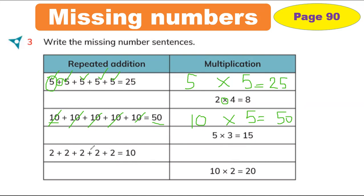Write 2 first, then count how many times, then write the answer. So here the number is 2. I'm going to write 2 four times: 2 plus 2 plus 2 plus 2. This is addition, so we use plus not multiply. And 2 plus 2 plus 2 plus 2 equals 8. This is the addition fact.